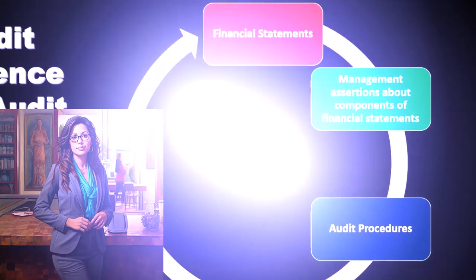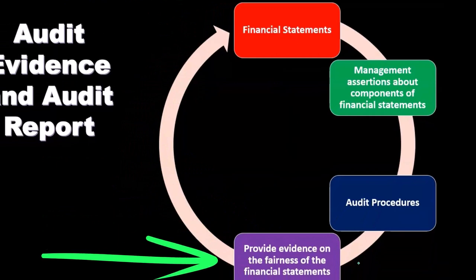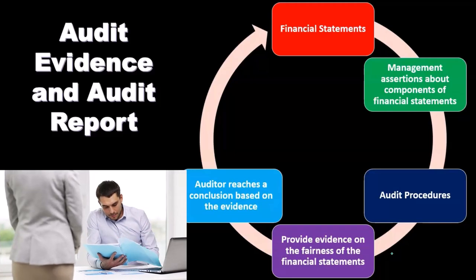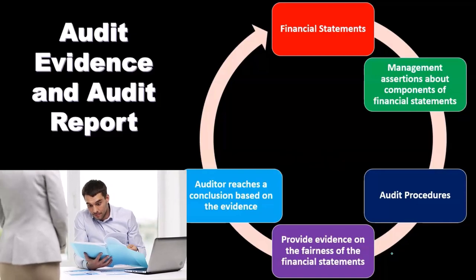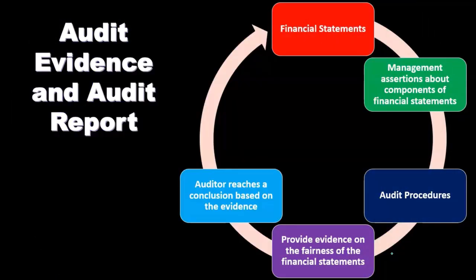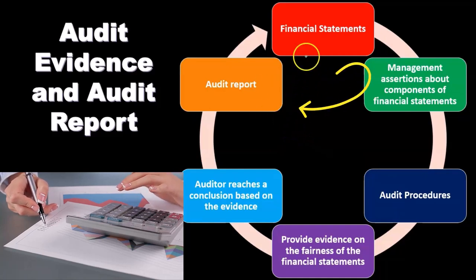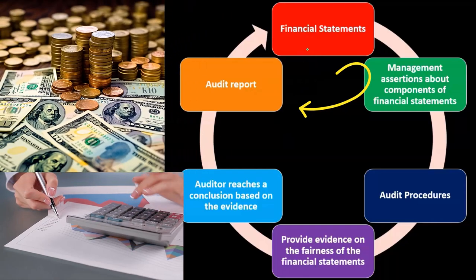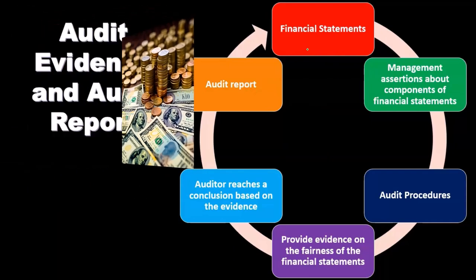Then we're going to test those assertions by going through audit procedures. We'll provide and document evidence on the fairness of the financial statements. The auditor will reach a conclusion based on the evidence, and hopefully the financial statements are reported fairly in accordance with standards such as generally accepted accounting principles. Then we issue the audit report — issuing an opinion on whether the financial statements have been reported fairly in accordance with GAAP or whichever standard applies.